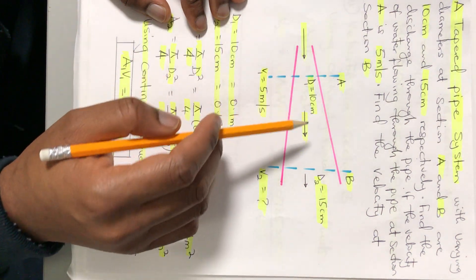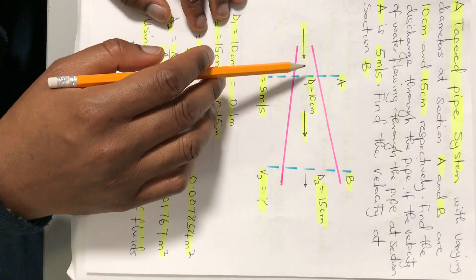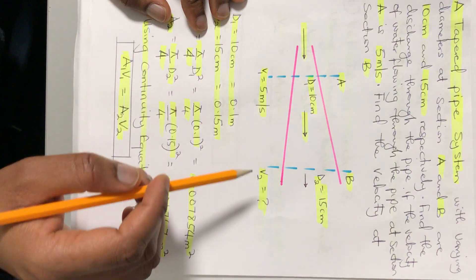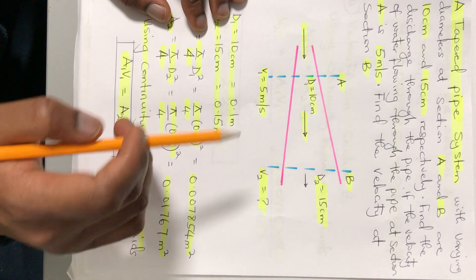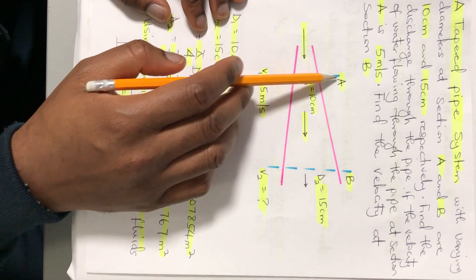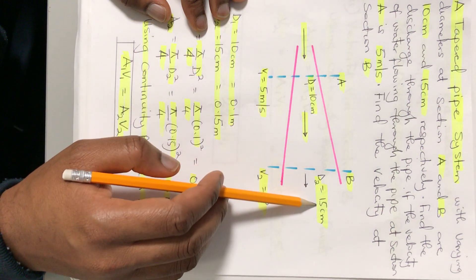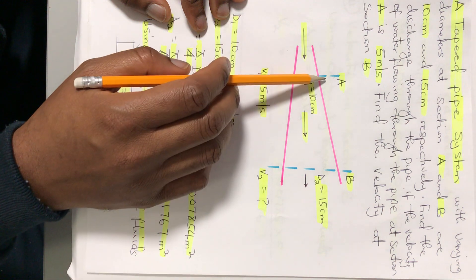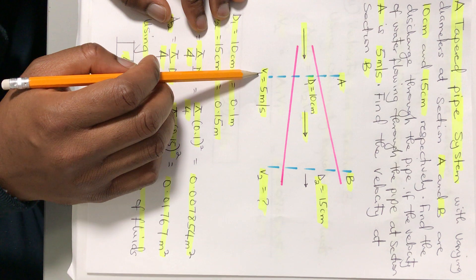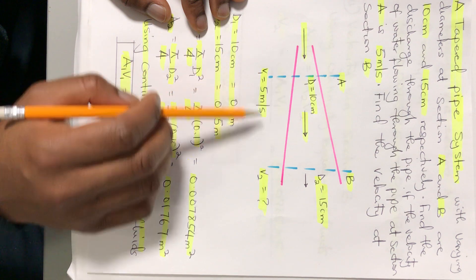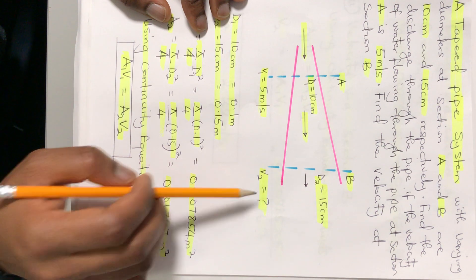We have a taper pipe system — that is a piping system of varying diameters across the section. At section A the diameter is 10 centimeters, at section B the diameter is 15 centimeters, and the velocity at section A is 5 meters per second. The velocity at section B is unknown and we need to find it.